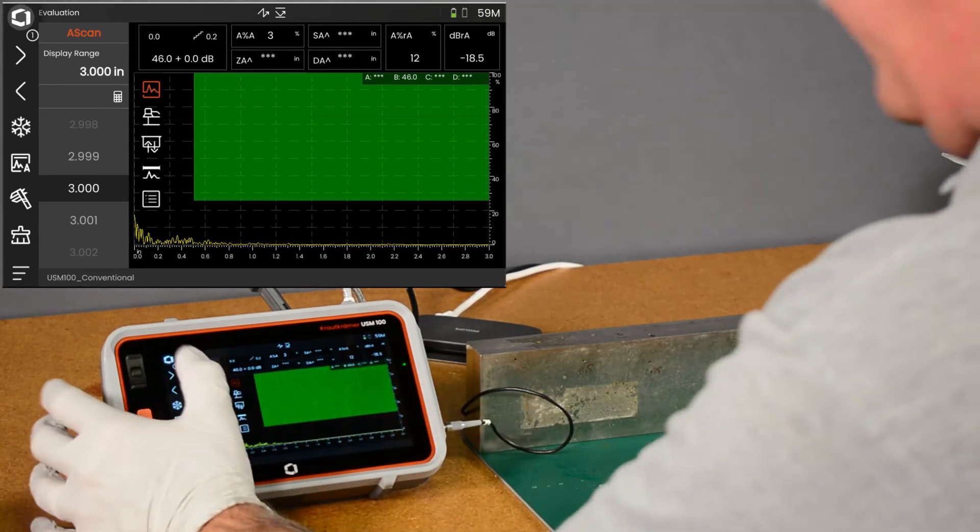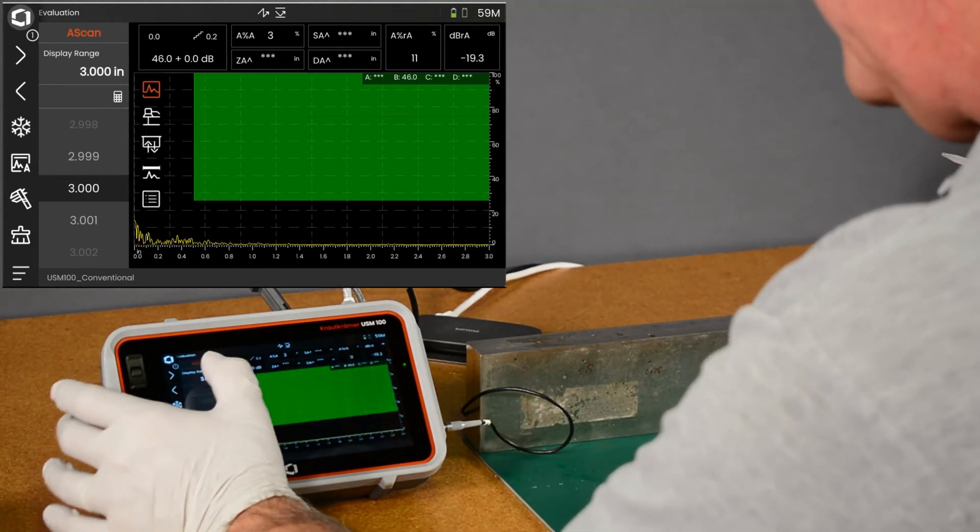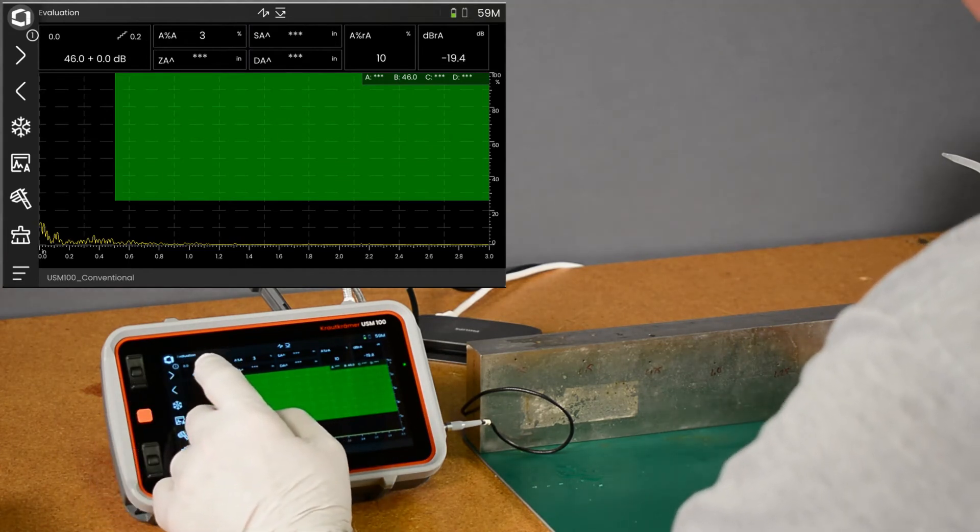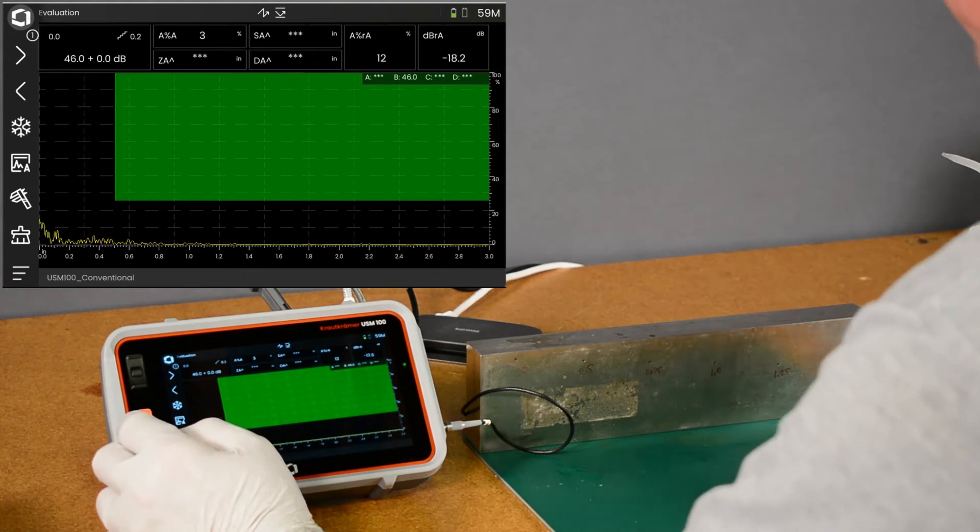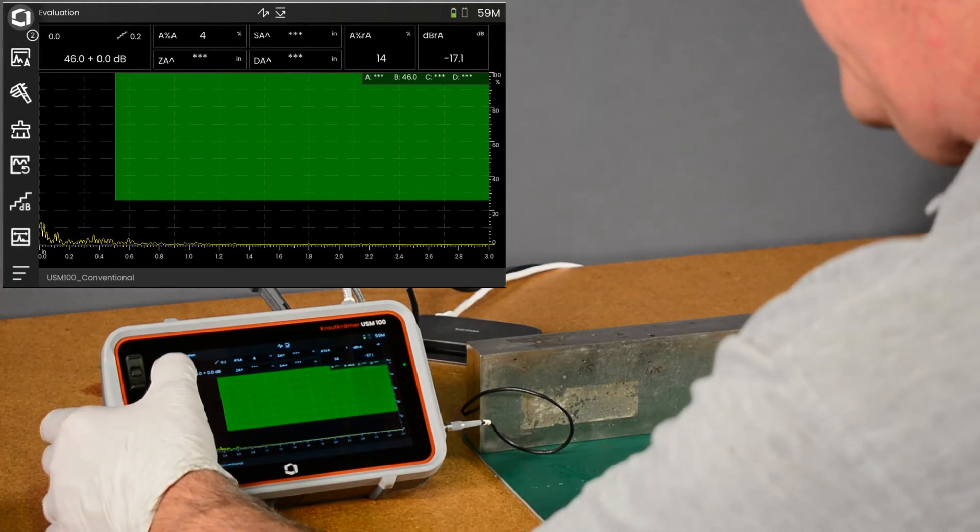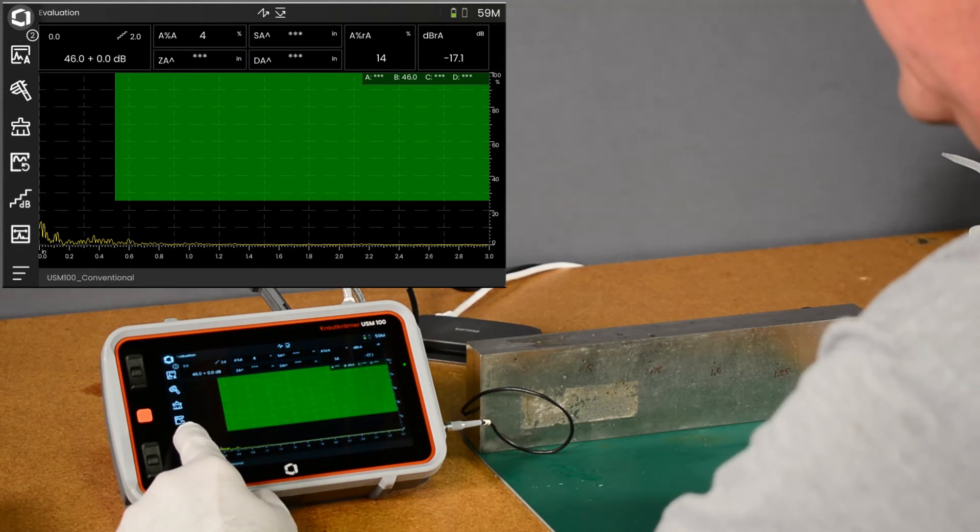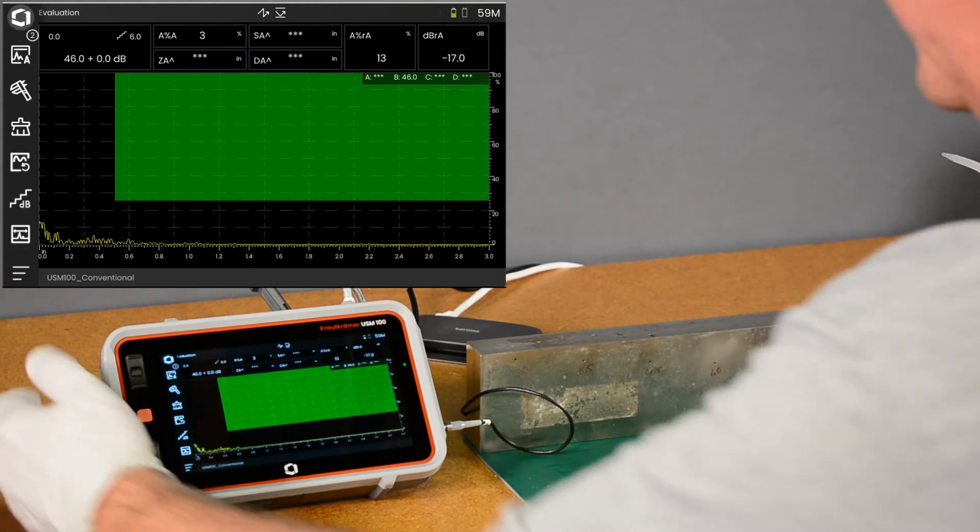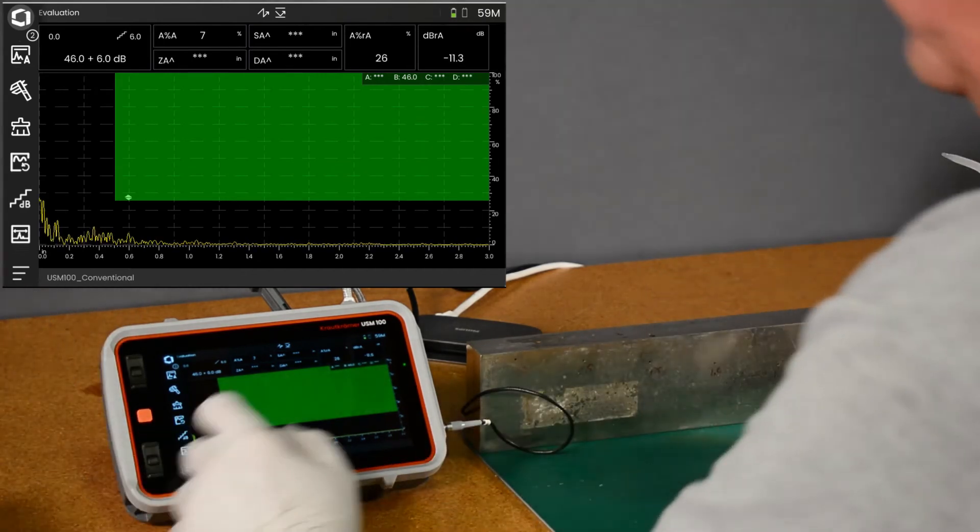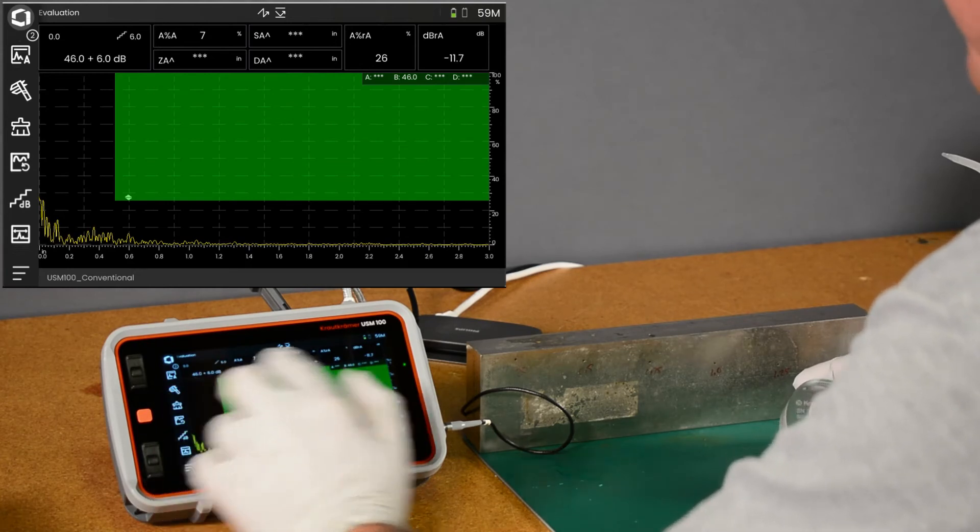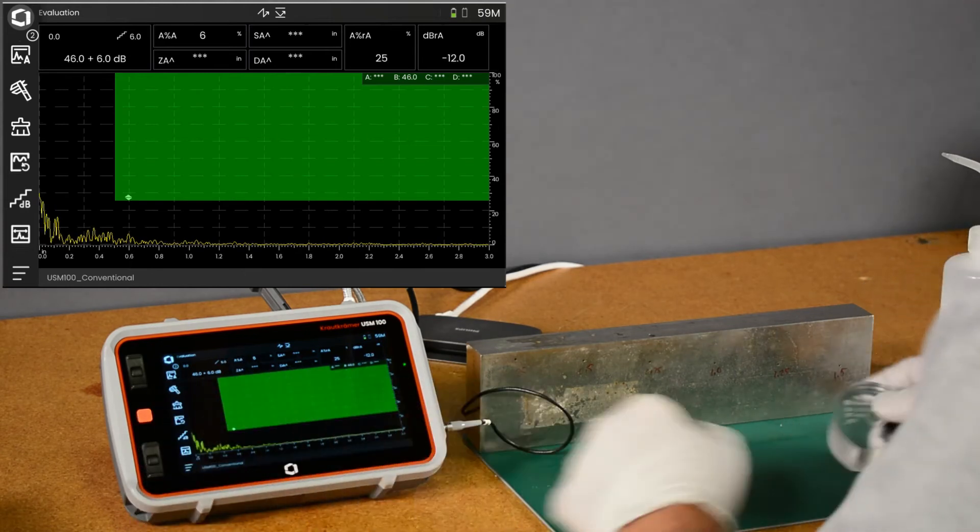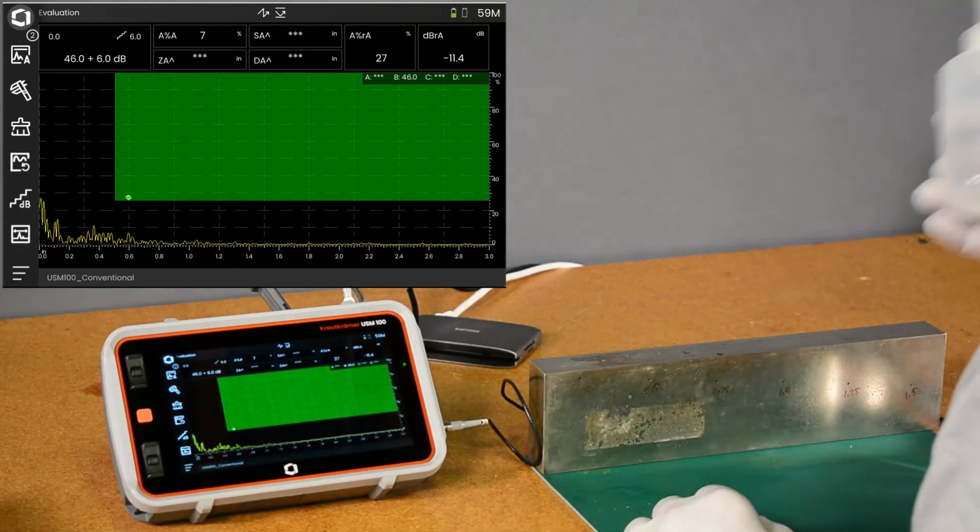Now typically, once calibration is done and you're ready to scan, most inspection procedures call for you to increase the gain, often by 6 or 10 dB, to give you a scanning gain level. It helps you quickly find indications. We're going to scroll up on our menu and change our dB step to 6. Now if I increase my gain by one step, you see my gain is expressed as 46, which was my reference gain, and I've added 6 dB to scan with.